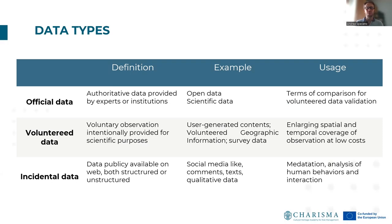We can distinguish three types of the most common data used in citizen science: official data, voluntary data, and incidental data. Official data means authoritative data provided by experts or institutions, such as open data or scientific data, commonly used as terms of comparison for voluntary data validation. Voluntary data are voluntary observations intentionally provided for scientific purposes — examples include user-generated contents from social media or digital platforms, voluntary geographic information, and survey data. Their usage is common for enlarging spatial and temporal coverage of observation at low cost.